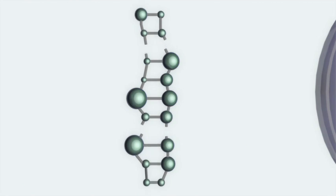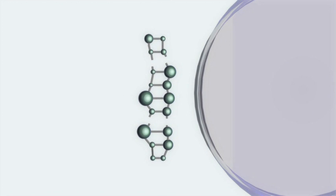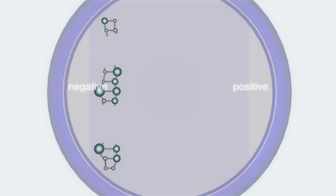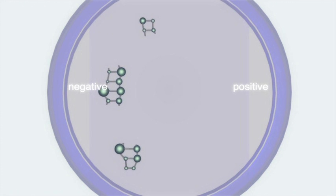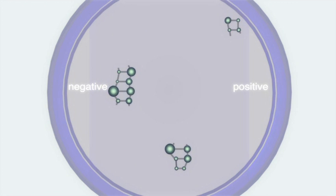Agarose gel electrophoresis is a common method of isolating regions of DNA. A gel tray is prepared with DNA samples placed in wells along one side. DNA molecules have a strong negative charge, so if an electric field is applied to the tray, they'll move toward the positive electrode.